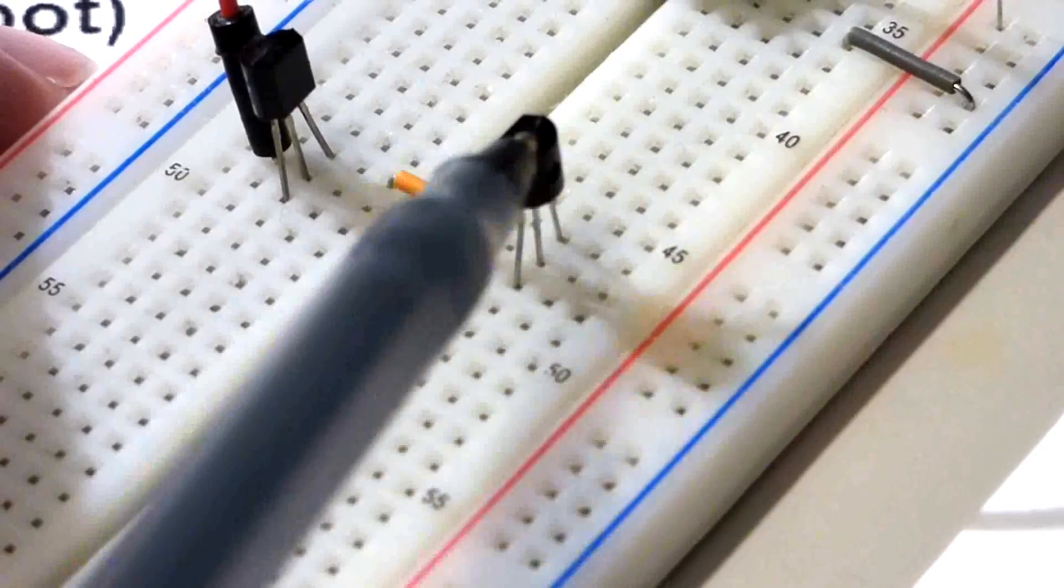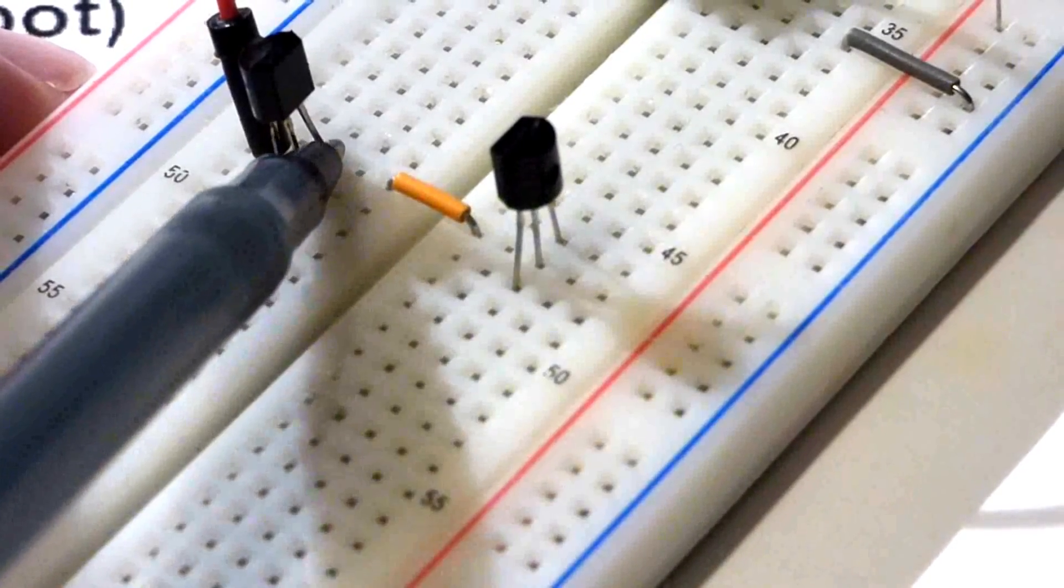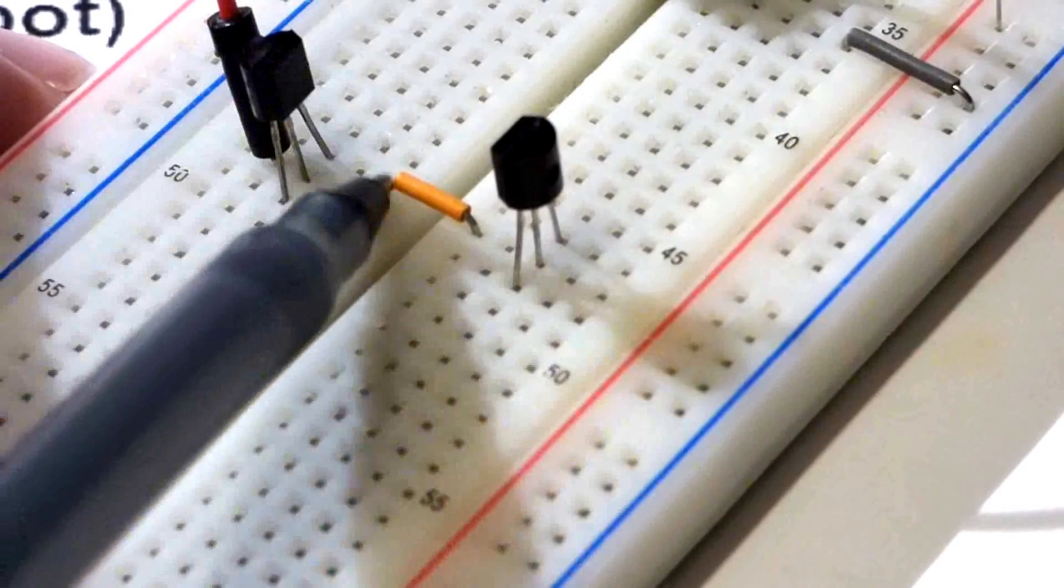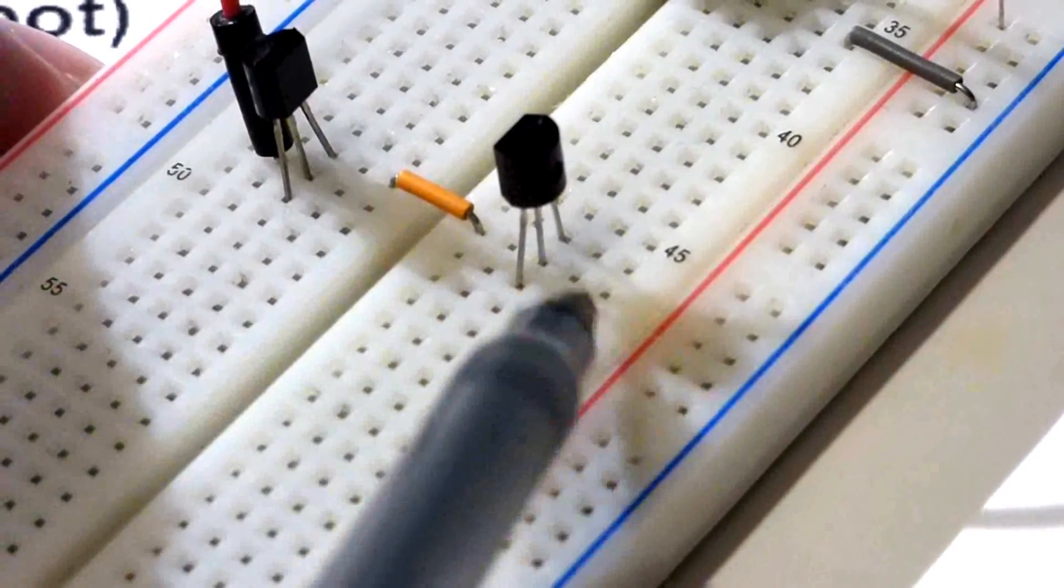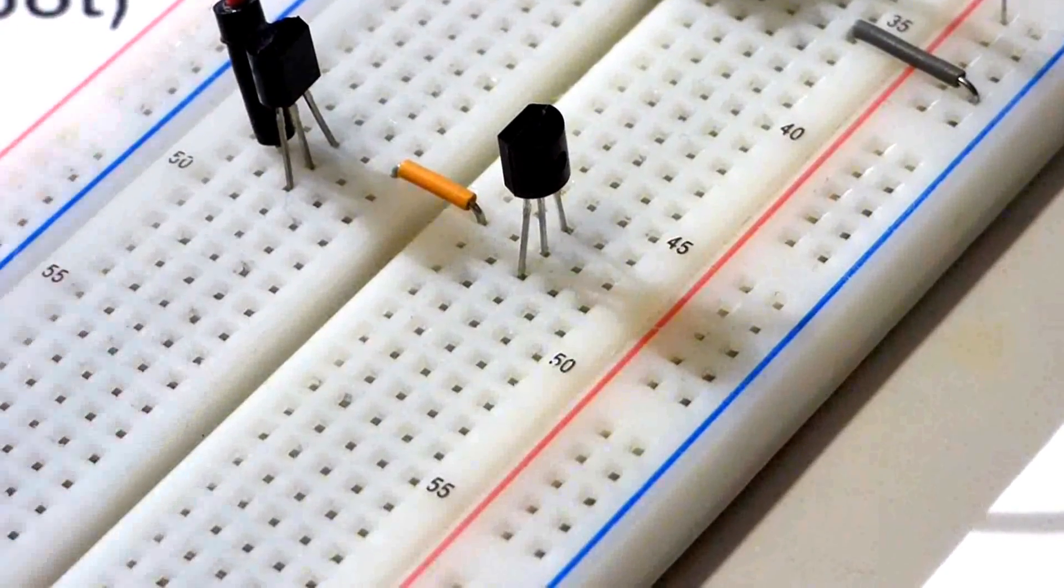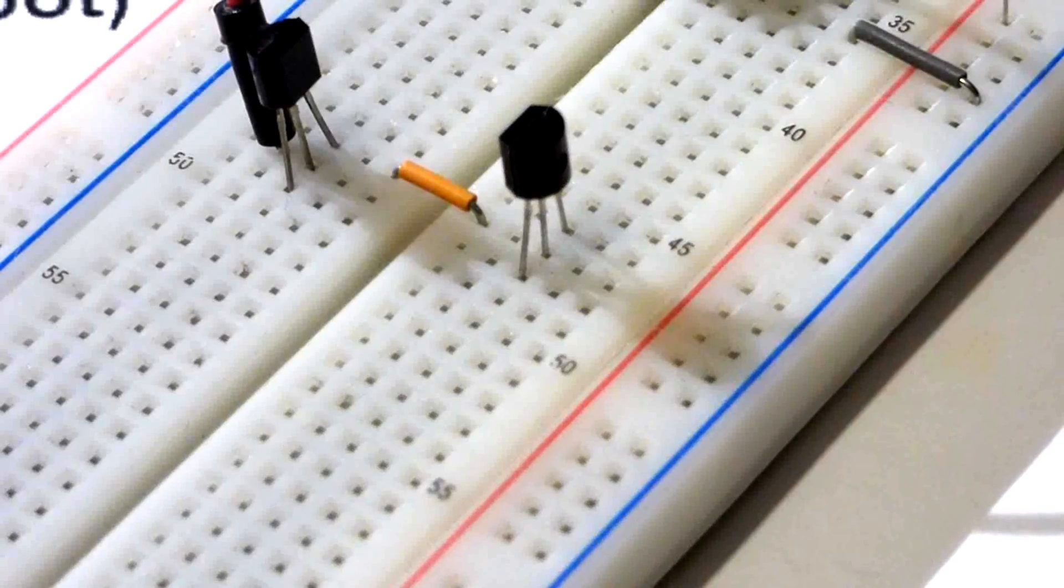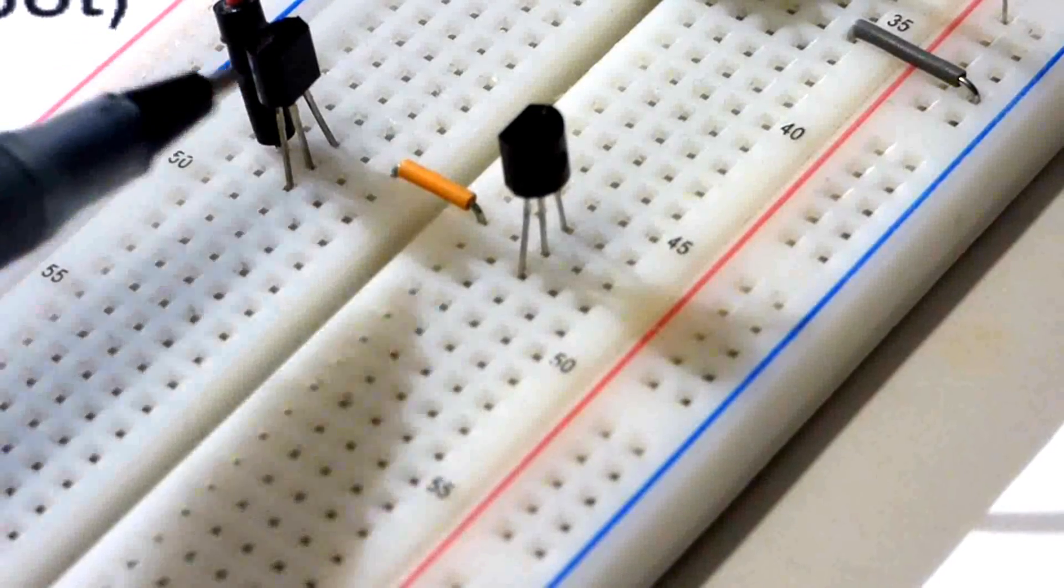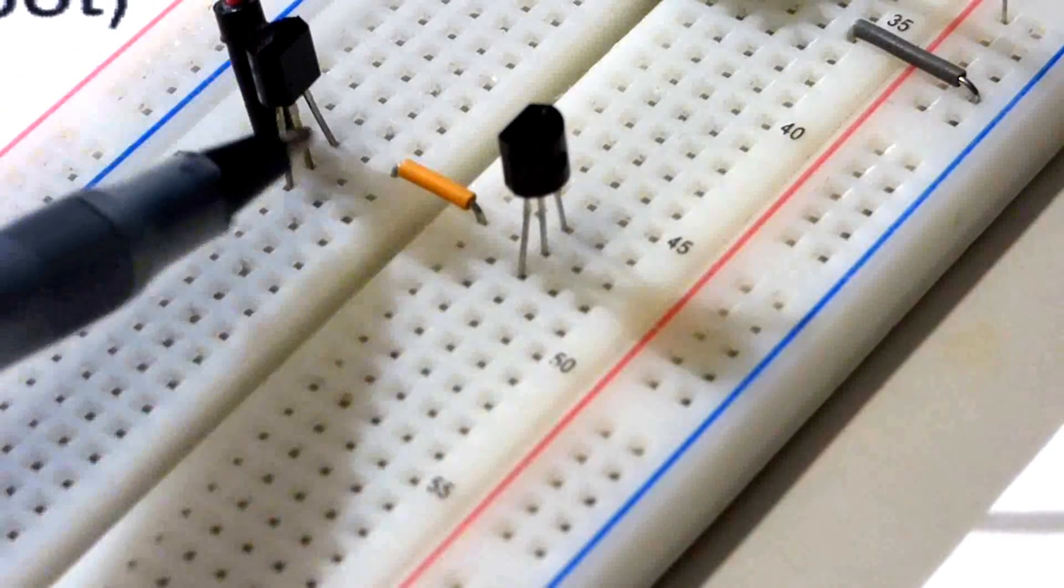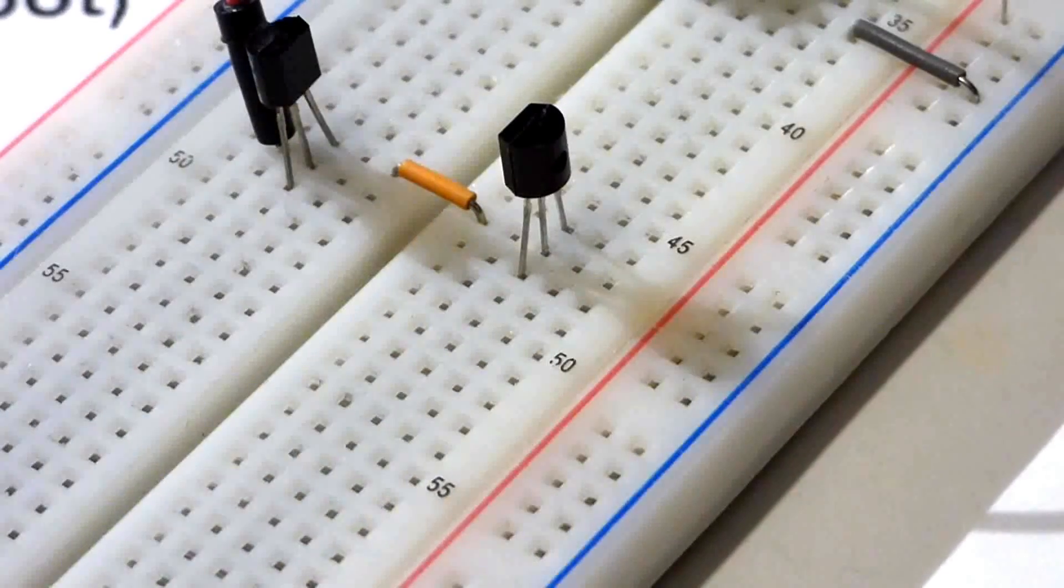And then the top pin here, this is the collector of this one. The emitter is down here, and so the emitter of the PNP is on top because it's turned the other way. So the collector of the NPN comes to the base, the middle pin of the PNP transistor, and that way we can use this transistor—when this one's on, that turns this one on.